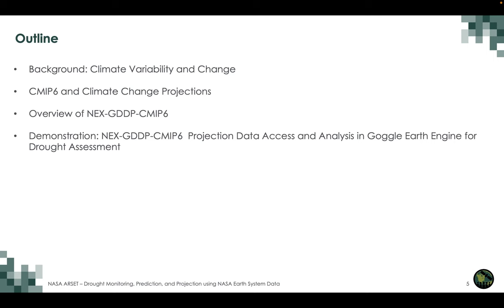The overall outline is that we will start with the background of climate variability and change, then a brief description of CMIP6 and climate change projections, then an overview of the NEX-GDDP-CMIP6 system, and then a demonstration of NEX-GDDP projection data access and analysis in Google Earth Engine for drought assessment evolving over several decades.